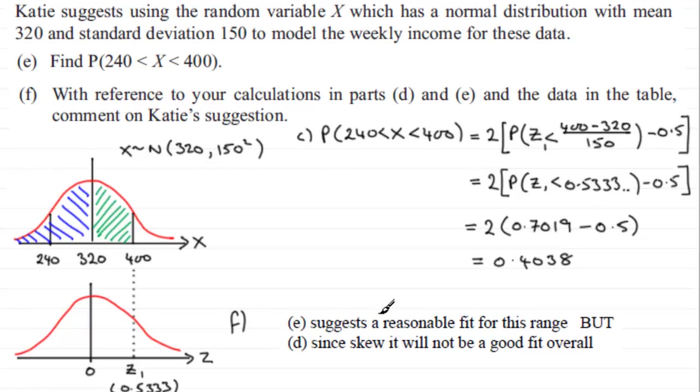In summary, part E suggests a reasonable fit for this range, but in part D, since it's skewed, it will not be a good fit overall.